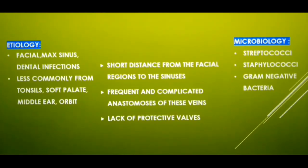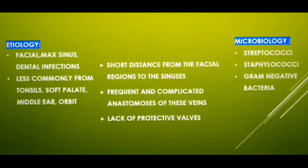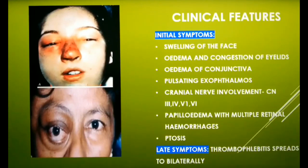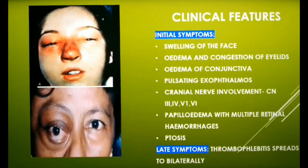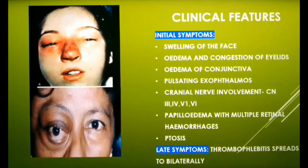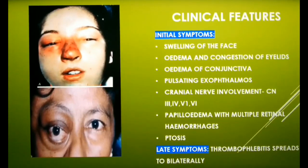The bacteria implicated include streptococci, staphylococci, and some gram-negative bacteria. Clinical features include generalized constitutional symptoms like high fluctuating fever, chills, rapid pulse, and sweating. Initial symptoms present with swelling of the face and edematous involvement of the eyelids, with pain and tenderness in the eye. There is venous obstruction leading to marked edema and congestion of the eyelids, and edema of the conjunctiva due to impaired venous return.